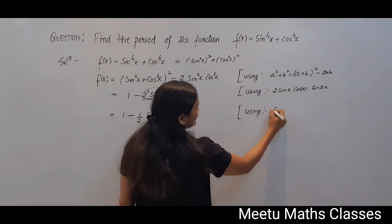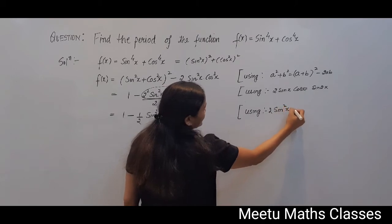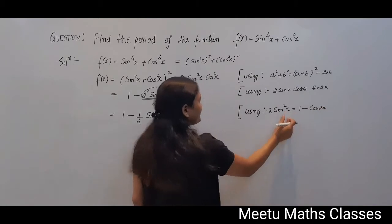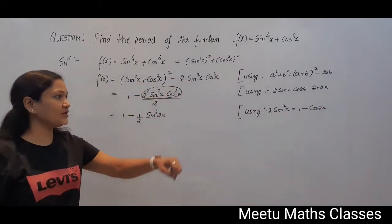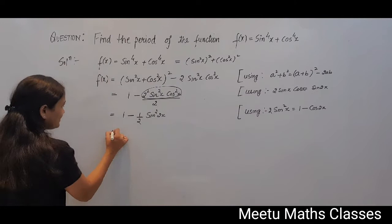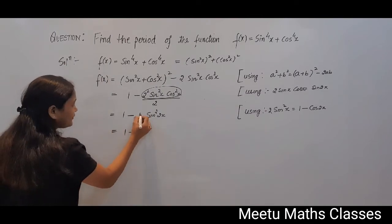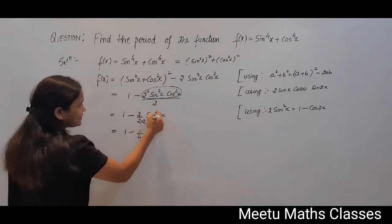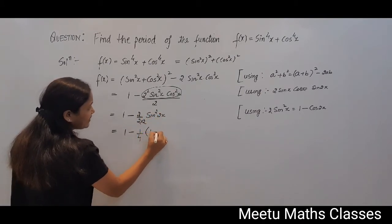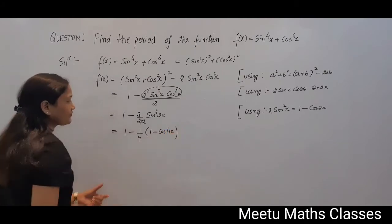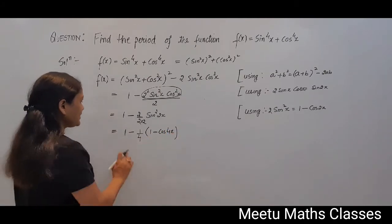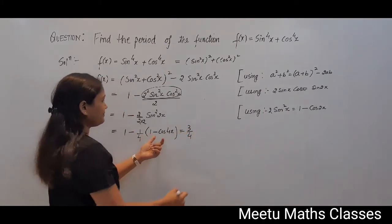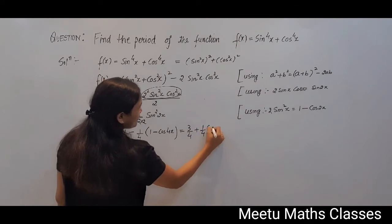We apply the formula 2sin²x = 1 - cos2x. Multiplying and dividing by 2, we get 1 - (1/4)·(2sin²2x) = 1 - (1/4)(1 - cos4x).